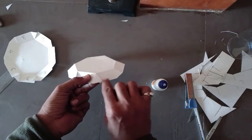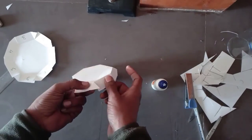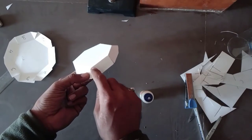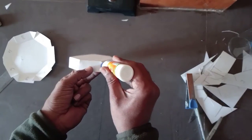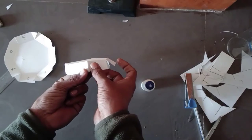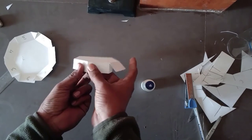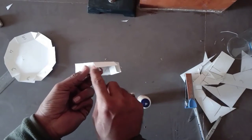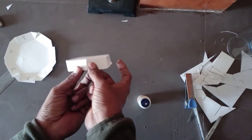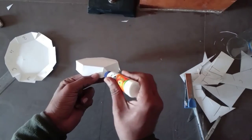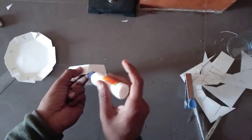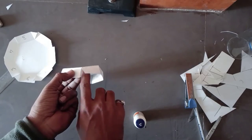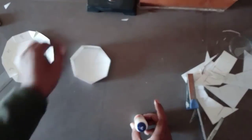Now apply glue on each triangle and paste it to the adjoining rectangle over the rectangle. In this way our half model is ready. Do the same for the other half also.